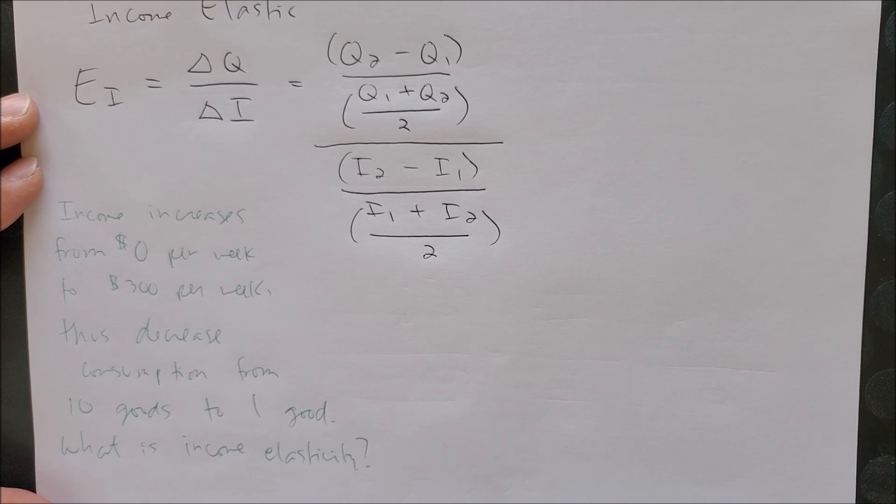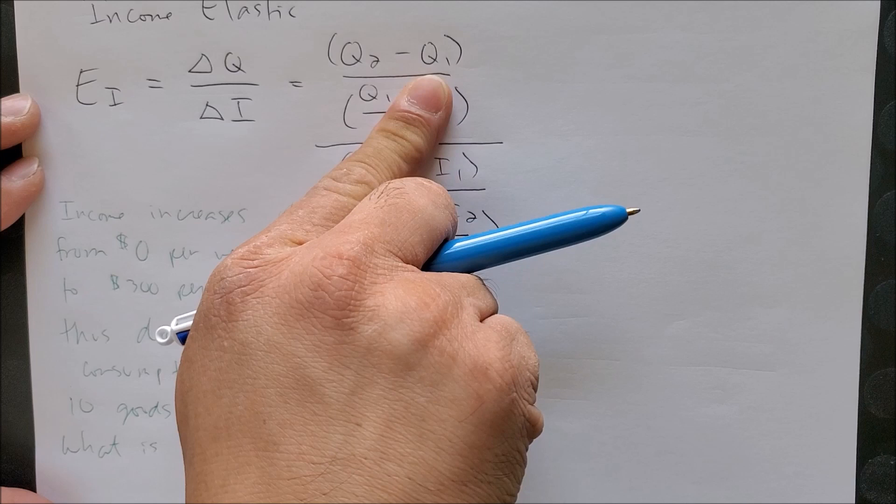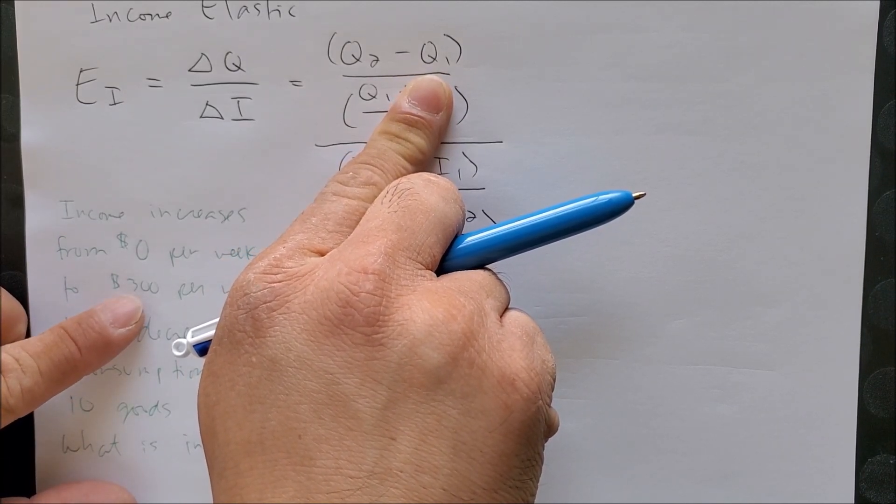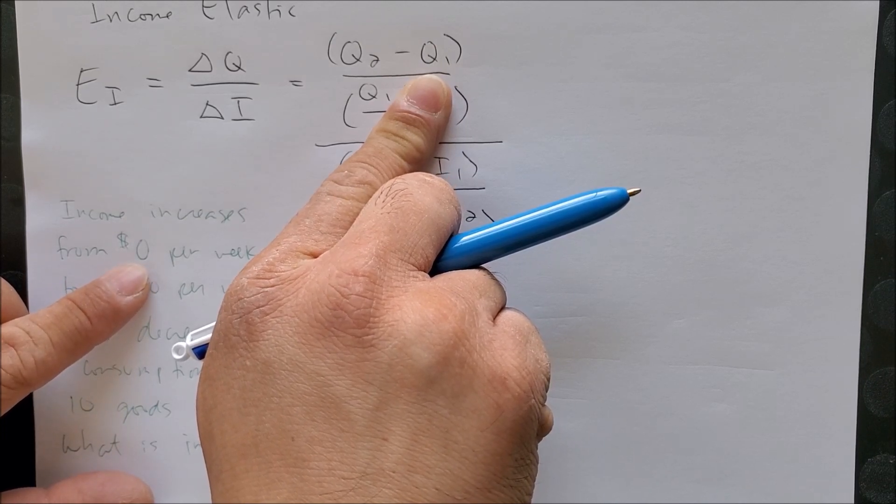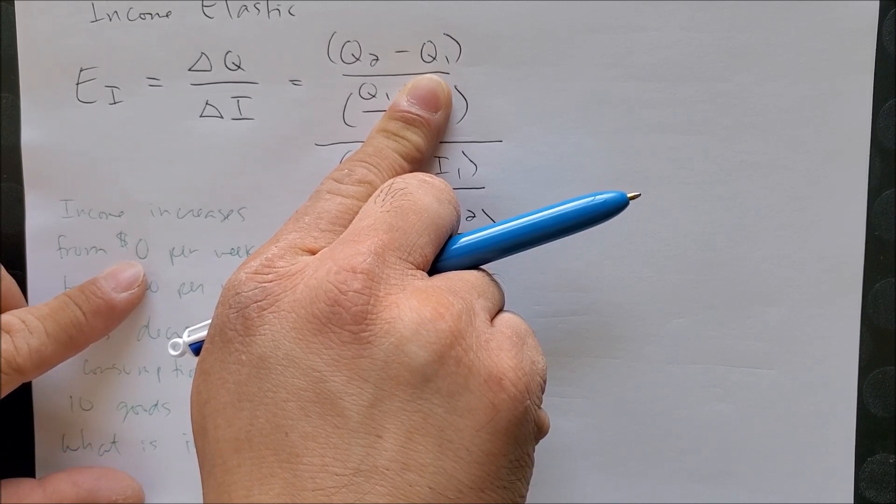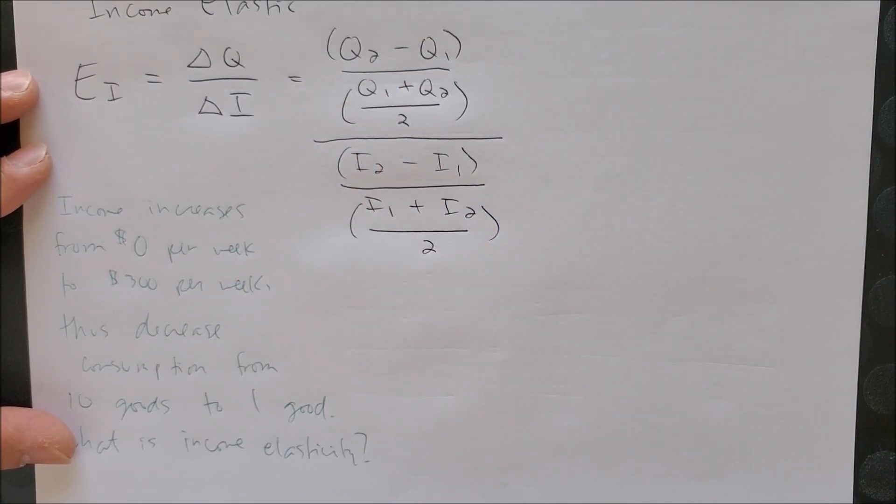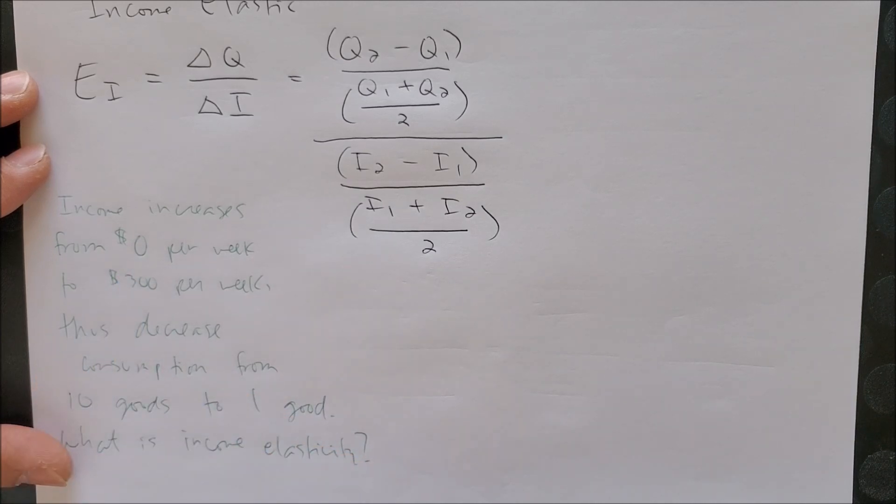If we were to use the old equation of Q2 minus Q1 over Q1, what's going to happen? We're going to have 300 as Q2 minus zero dollars Q1 over zero for Q1. We know that in math whenever we have zero in the denominator it is undefined, so we can't solve further. That's why this midpoint equation is really useful when we have zero as the starting point in either quantity or in income.